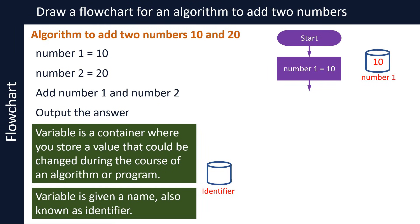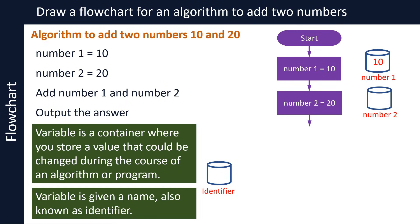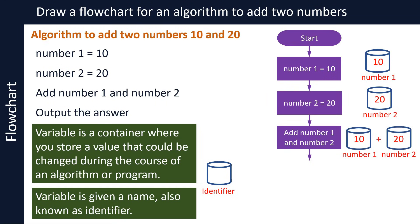We draw the process symbol again to denote another process: assigning value 20 to a variable called number 2, or in other words, storing value 20 in number 2. We draw the next process symbol for the addition operation. When we say add number 1 and number 2, the values stored in those variables will be added together — that is, 10 and 20. Whenever we perform any operation on variables, we are instructing computers to perform the operation on the values stored in the variables, rather than the variable names.